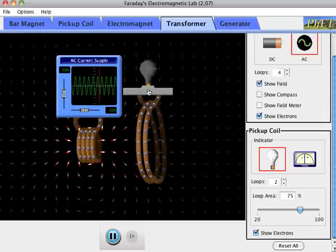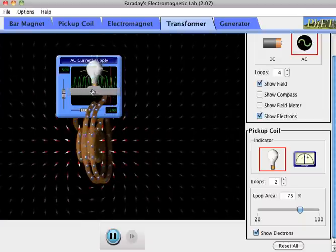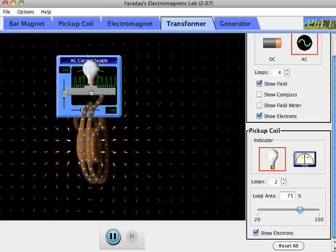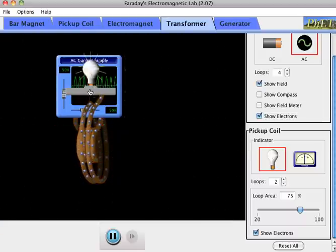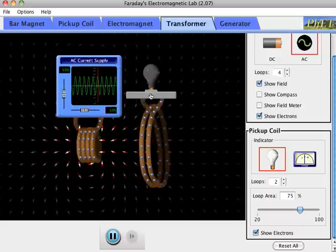If I put this closer, I get a bigger effect, because the magnetic field is bigger inside here, so it's a bigger flux that's switching back and forth than if I put it out here.